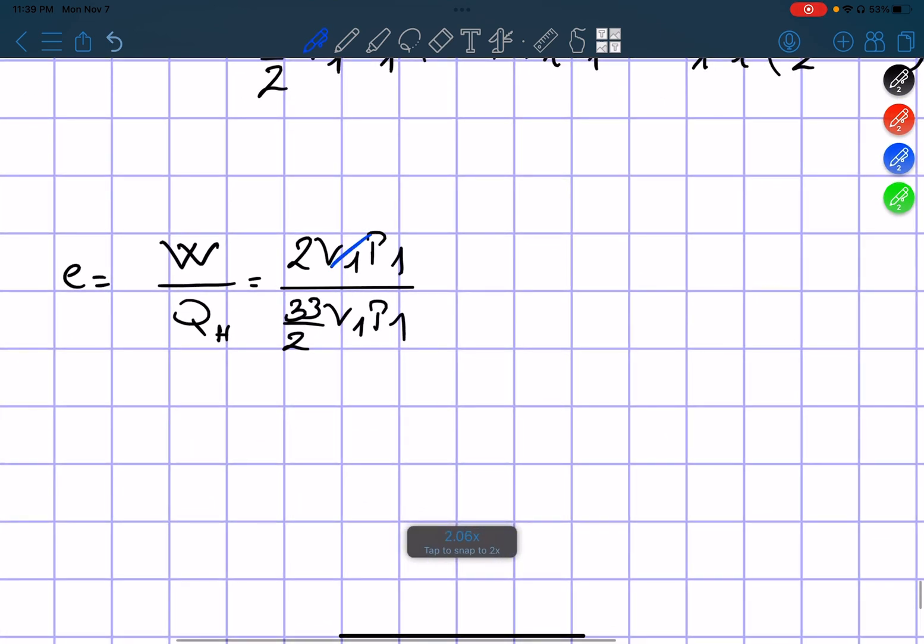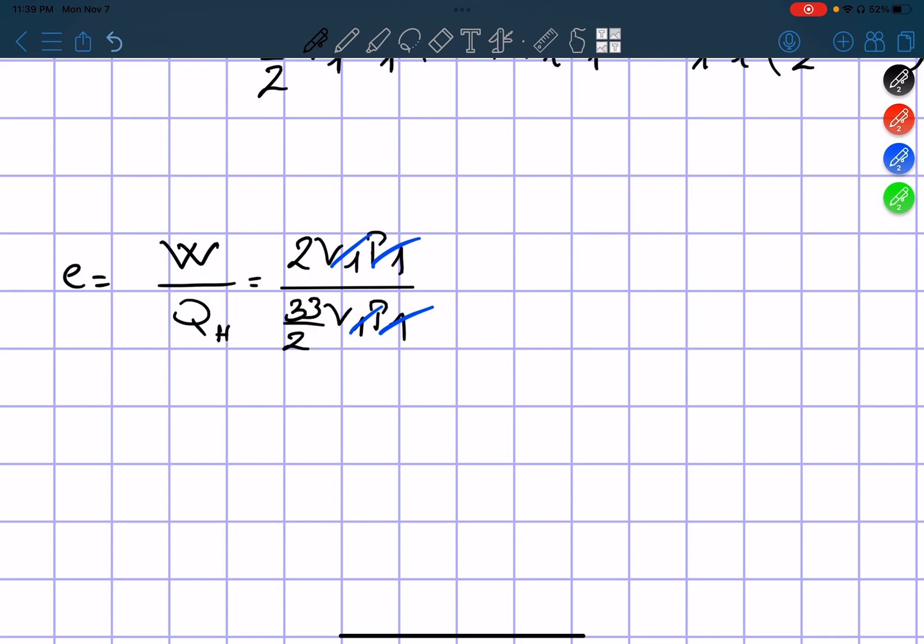So this V1 P1 all simplifies, and we obtain 4 over 33 which equals about 12%.